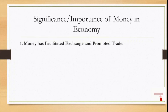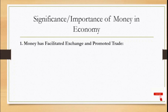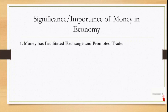First point: money has facilitated exchange and promoted trade. In the first place, by serving as a medium of exchange and a common measurement of value, money has removed the difficulties of the barter system and promoted trade in the economy. The difficulties of the barter system — namely lack of double coincidence of wants, lack of division, and lack of common measure of value — are well known. By removing these difficulties, money has greatly facilitated the process of exchange. In the absence of money, trade and exchange would have been few and far between and entailed a great waste of time and energy.